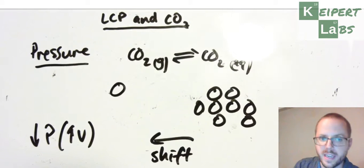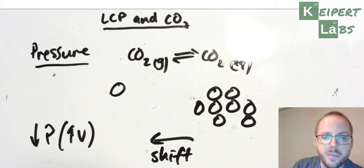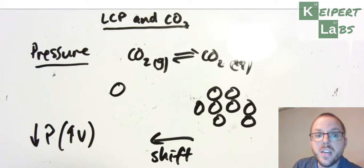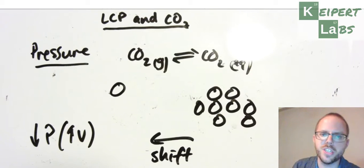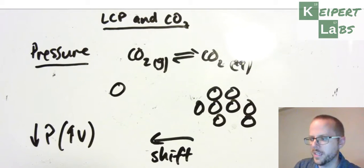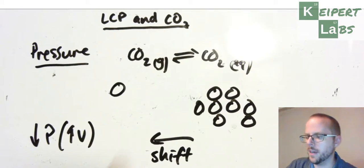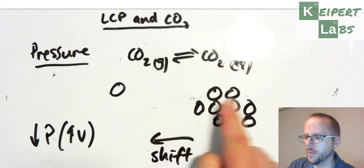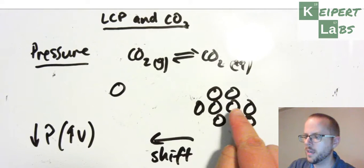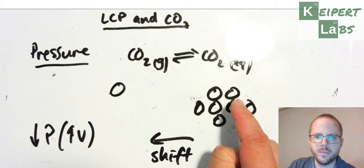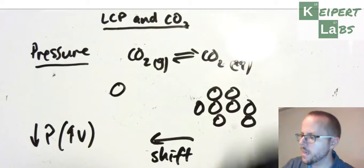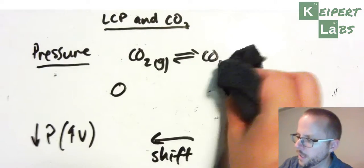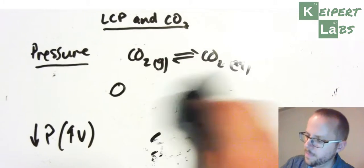Looking at it in reverse: if we increase the pressure — say we take the container and squash it down — then we're going to take some of those gas particles and shift the equilibrium to the right, meaning more will dissolve.